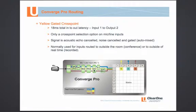The signal continues through the AGC and ALC — AGC is automatic gain control, ALC is automatic level control — and through the automatic mixer, or the gating parameters. Going from input 1 to output 2 takes the longest amount of time, which is 18 milliseconds.